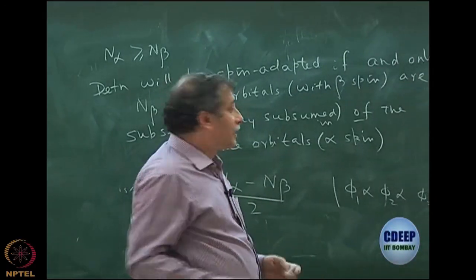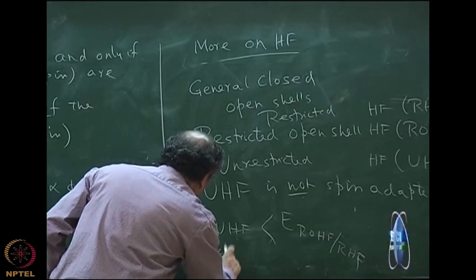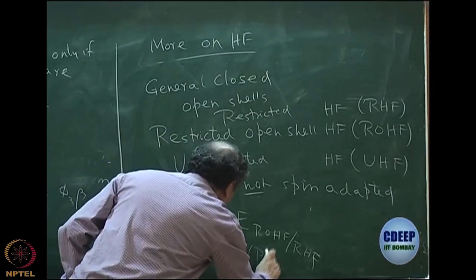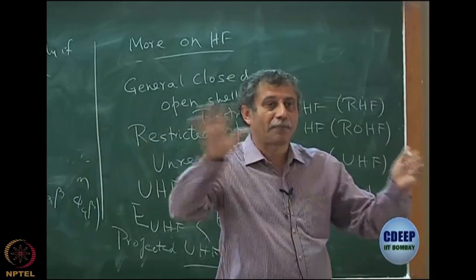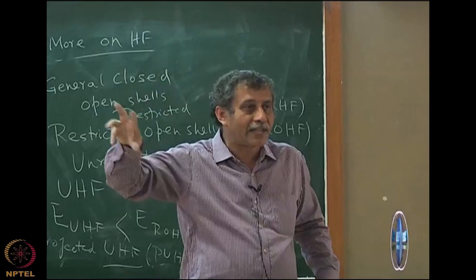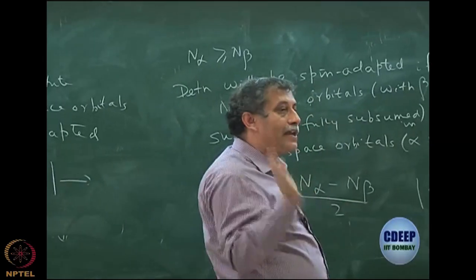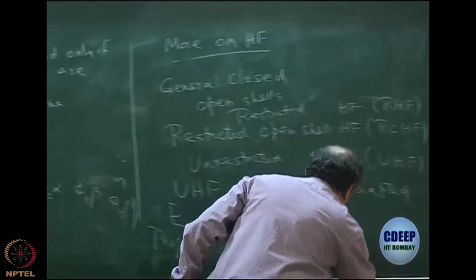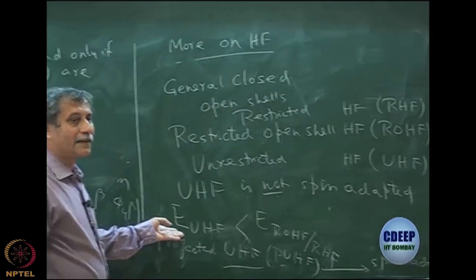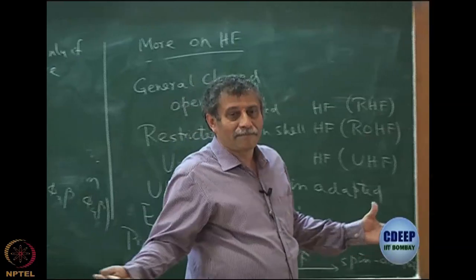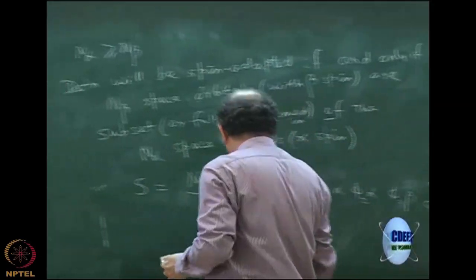There is a way to get spin adaptation after doing UHF, called projected UHF or PUHF. You first do UHF and then from the UHF wave function, you project out singlet, triplet, or doublet using projection operators — similar to what we do in group theory. So PUHF is spin-adapted. But the moment you do PUHF, you lose the energy variational advantage because you are not taking the full wave function — only a part of it.